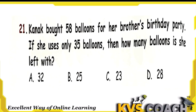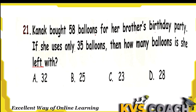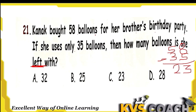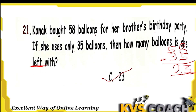The next question: Kanak bought 58 balloons for her brother's birthday party. If she used only 35 balloons, how many balloons is she left with? When we use the word 'left,' we need to subtract. 58 minus 35: 8 minus 5 is 3, and 5 minus 3 is 2. So 23 balloons are left. Option C is the right answer.